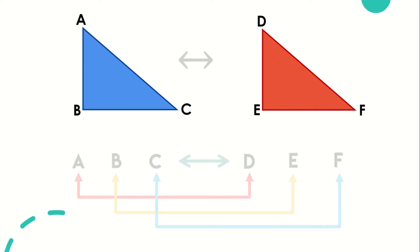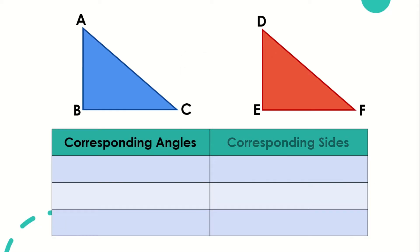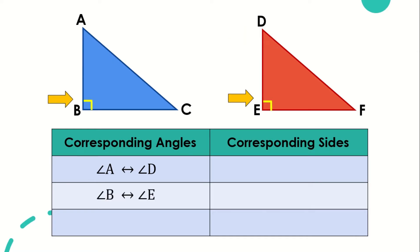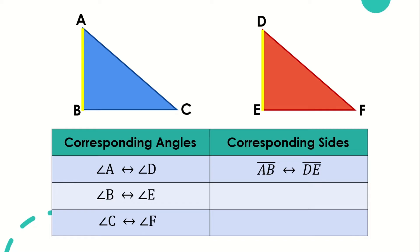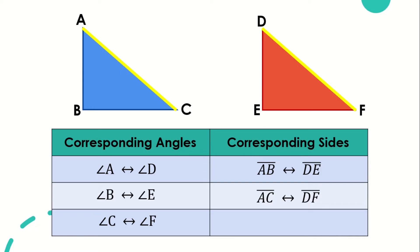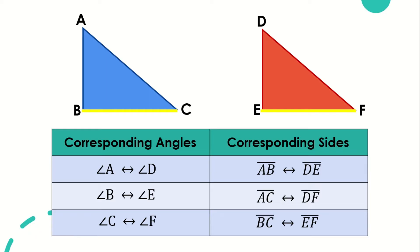In this correspondence, we can form three pairs of corresponding angles and three pairs of corresponding sides. For the corresponding angles: since vertex A corresponds with vertex D, angle A corresponds to angle D. The same goes with angle B and angle E. Moreover, angle C corresponds to angle F. For the corresponding sides: side AB corresponds to side DE, side AC corresponds to side DF, and side BC corresponds to side EF.